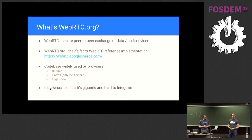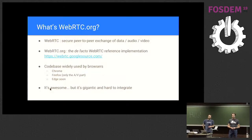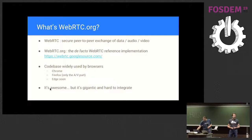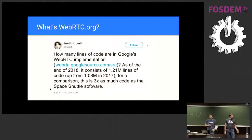The WebRTC.org code base deserves a lot of credit because it has put WebRTC into the hands of millions of people — we probably wouldn't be talking about WebRTC today without it. Nevertheless, if you've tried to integrate this code base into your own custom project outside the browser space, you'll have noticed it's a massive project. Integrating it is hard, tracking releases is challenging, and to give a ballpark figure: it weighs in at 1.2 million lines of code.